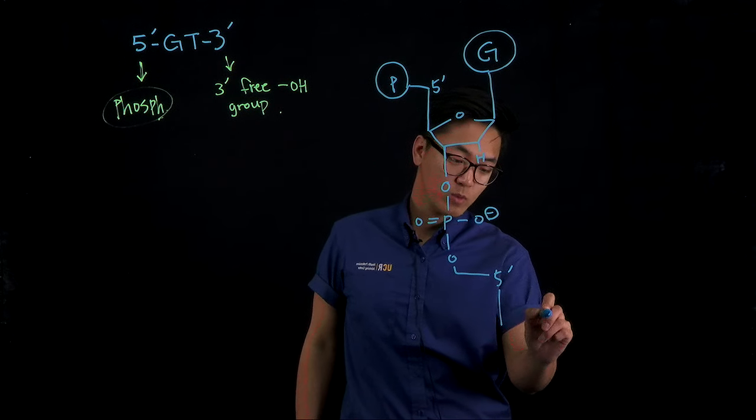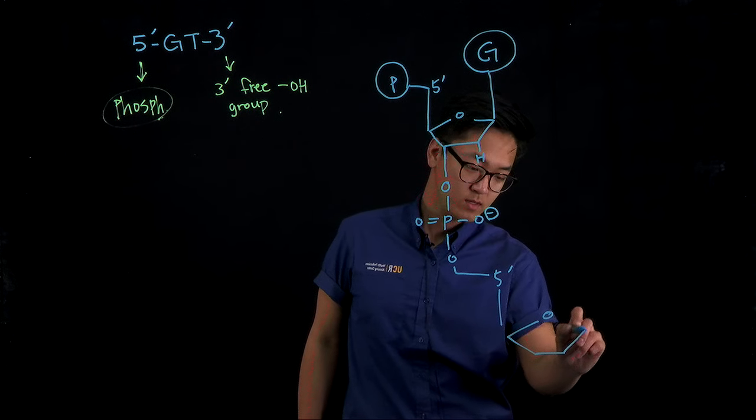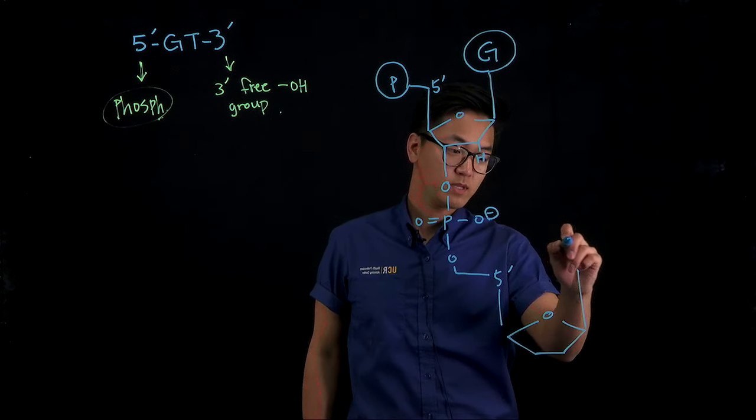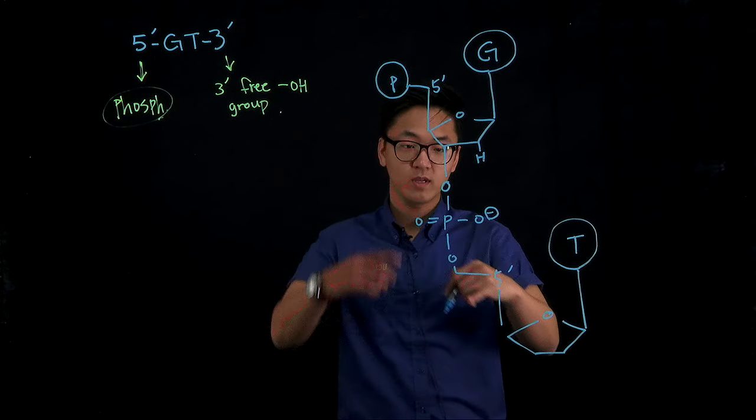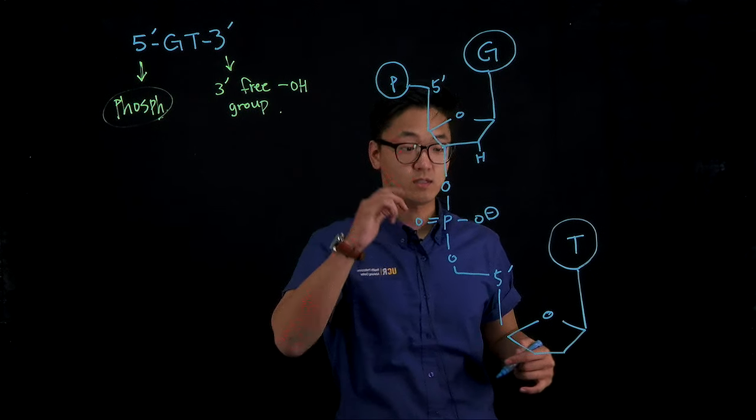So we just follow what we have drawn before, and this will be T base. So this phosphate group will be the phosphodiester linkage between these two bases.